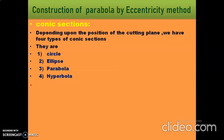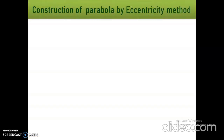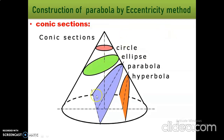Let us see the parabola shape. How can we get the parabola? This is a right circular cone. If we cut the right circular cone with the help of cutting plane CC, when the cutting plane is parallel to one of its generators, then the obtained section is called parabola.